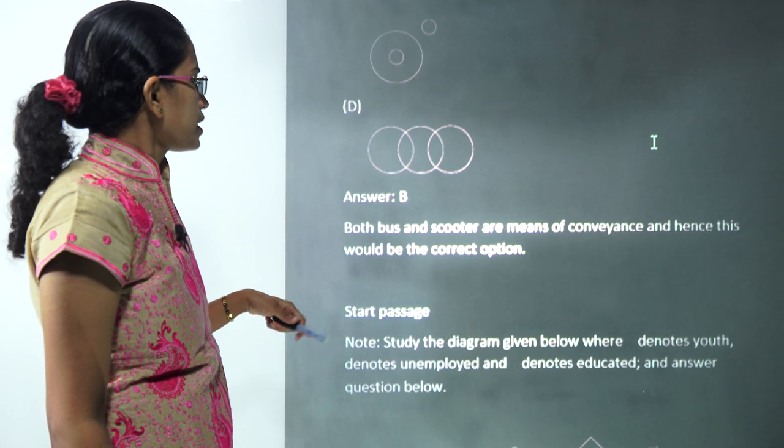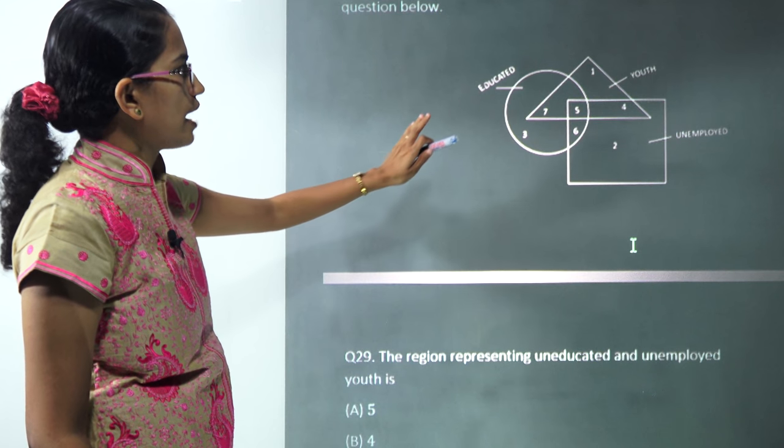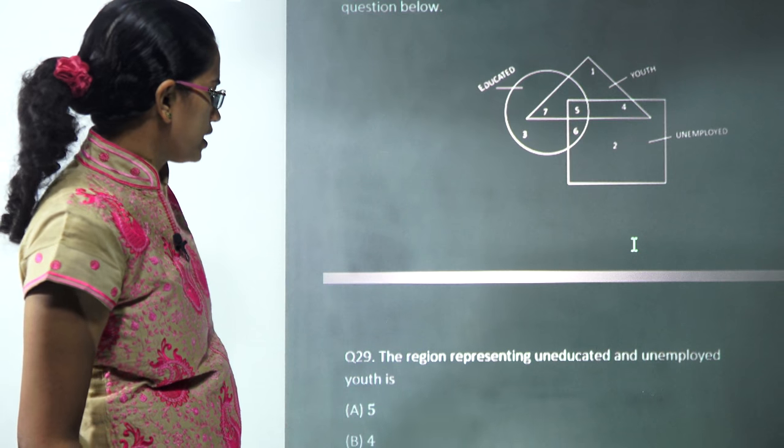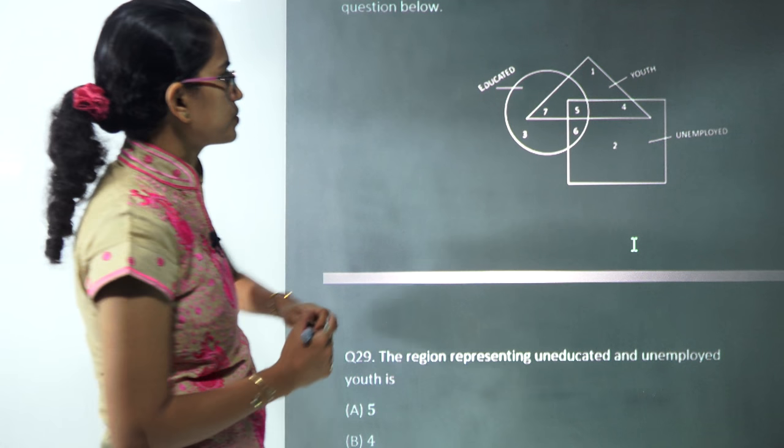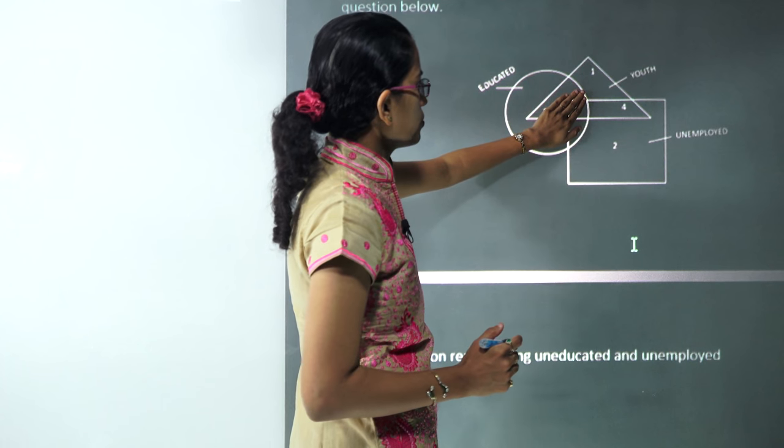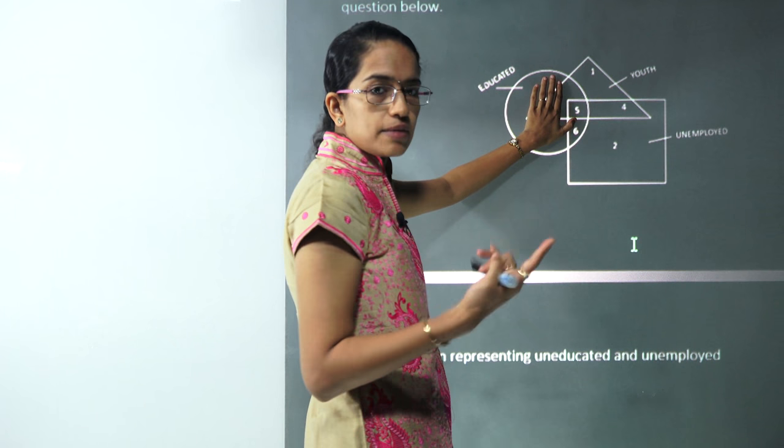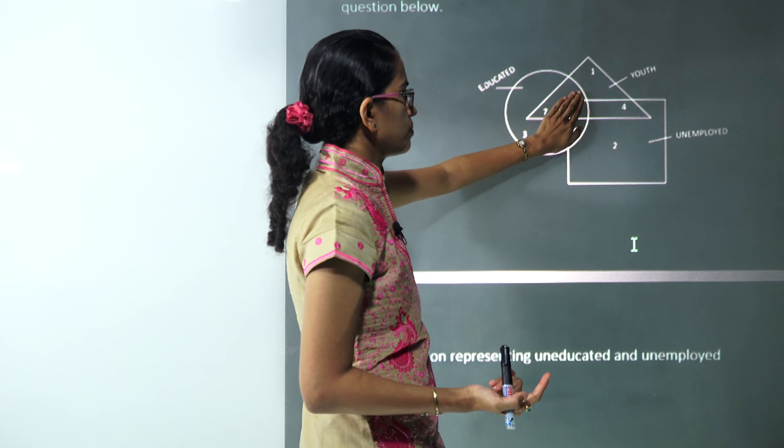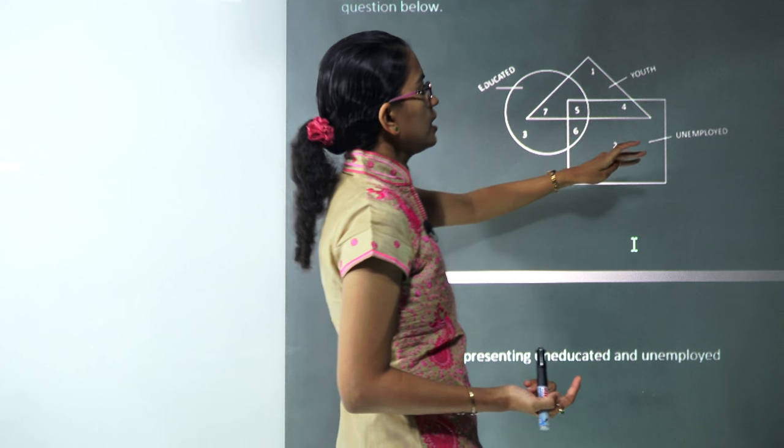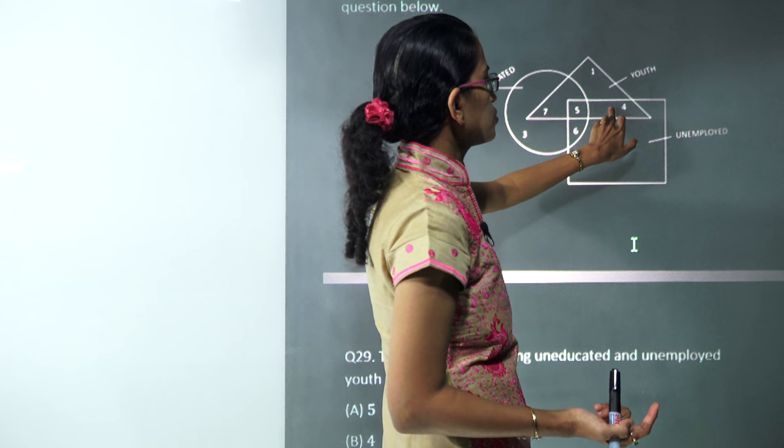The next question: you have educated youth and unemployed. Question C is region representing uneducated unemployed youth. So this is educated, I remove this. I have to find out unemployed youth uneducated, so this is all educated. Beyond this would be uneducated and it should be unemployed and youth, so 4 would be the correct answer here.